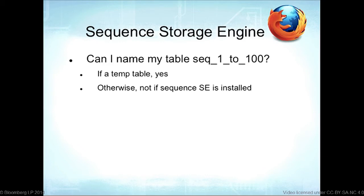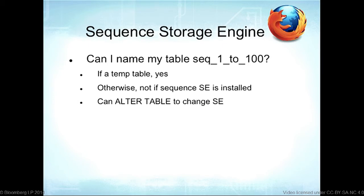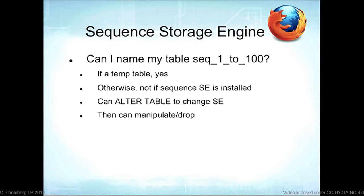If you have the sequence storage engine installed, you can't create a permanent table named 'seq_1_to_100', but if it's a temporary table you can name it whatever you want. You can also do 'ALTER TABLE seq_1_to_100 ENGINE=InnoDB' to manipulate and then drop it. The question about negative sequences — like 'seq_negative_1_to_1' — hasn't been tested but should work since it parses the numbers out.